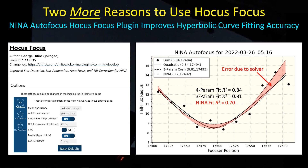Hey guys, welcome back. I've been running into some problems lately doing some autofocus runs as my SCT starts to point at low altitudes, between about 25 and 30 degrees altitude. What I'm finding is that Nina is repeating autofocus runs trying to achieve an R-squared value that I've set for the goodness of fit between the HFR data and the hyperbolic curve fit. I wanted to explore why this was happening, and along the way I found out we have two more reasons, yet again, to use HocusFocus.